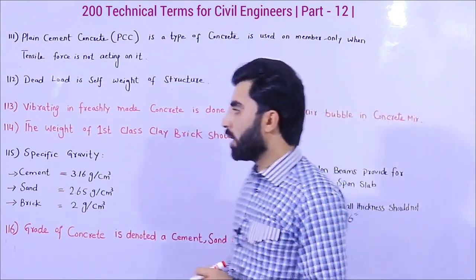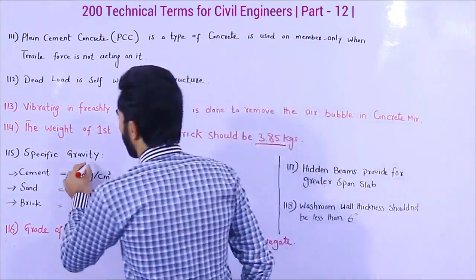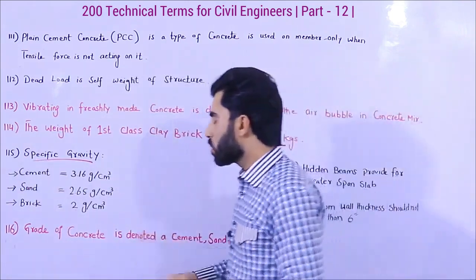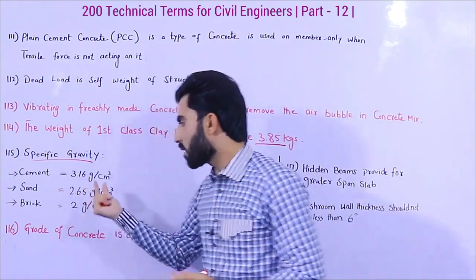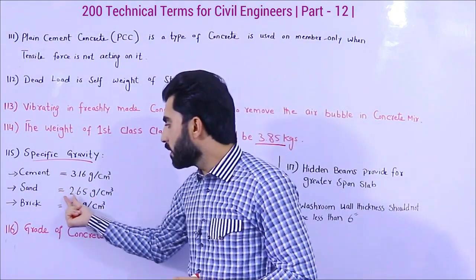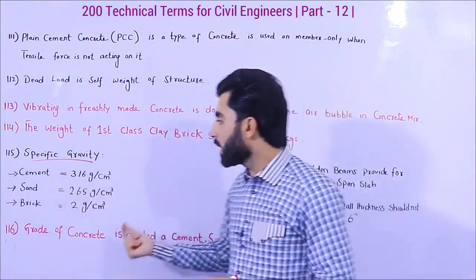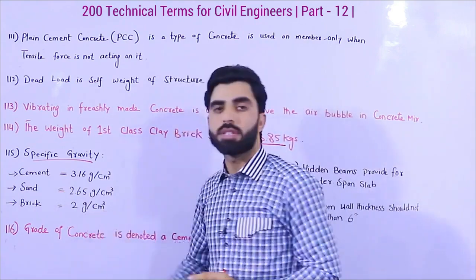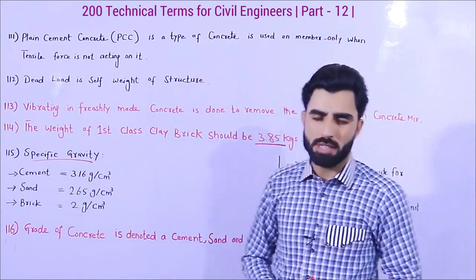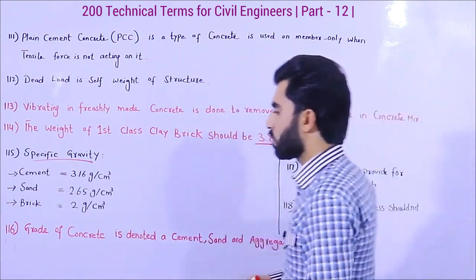Term number 115 is specific gravity. What is the specific gravity of cement, sand, and brick? The specific gravity of cement is 3.16 g per cm³, for sand it is 2.65 g per cm³, and for brick it is 2 g per cm³. If anyone asks you about specific gravity, these are the answers.